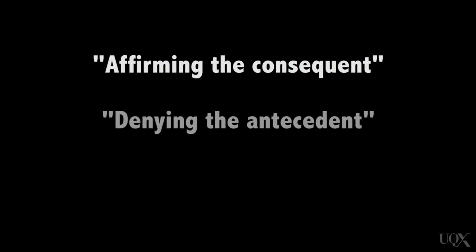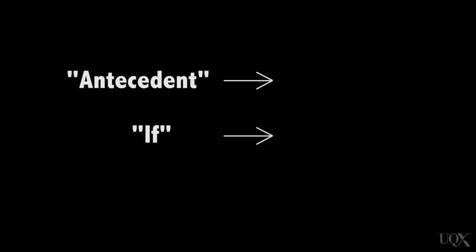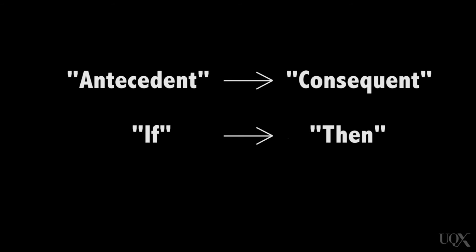The two main deductive fallacies are affirming the consequent and denying the antecedent. In conditional if-then statements, we call the if-part the antecedent and the then-part the consequent. So if we say: 'If you watch Denial 101, then you'll have a good understanding of climate science denial' — that's our conditional.